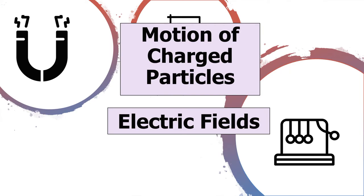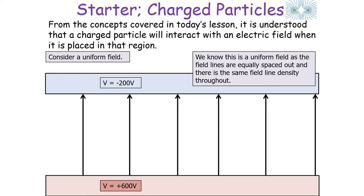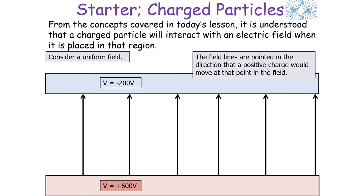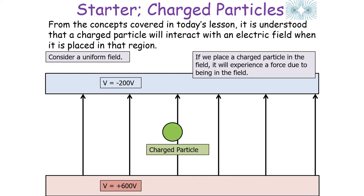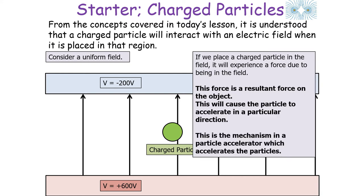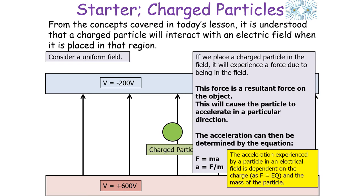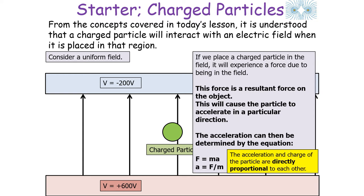The next topic is the motion of charged particles. A charged particle placed in an electrical field will interact with it. Consider a uniform field between two parallel plates with a potential difference of 800 volts — the field lines point towards the more negative plate. A charged particle in the field experiences a force, and its acceleration is given by a = F/m. Since F = EQ, acceleration is directly proportional to charge and inversely proportional to mass; the acceleration depends on the charge-to-mass ratio of the particle.